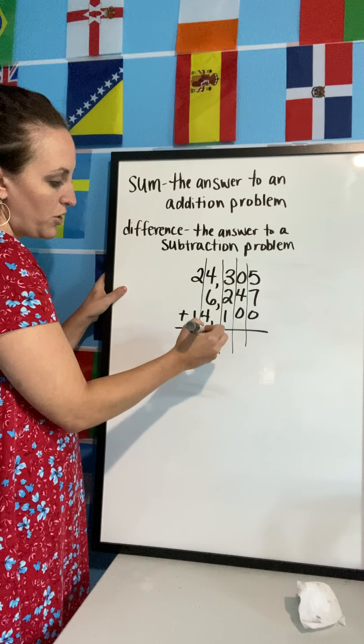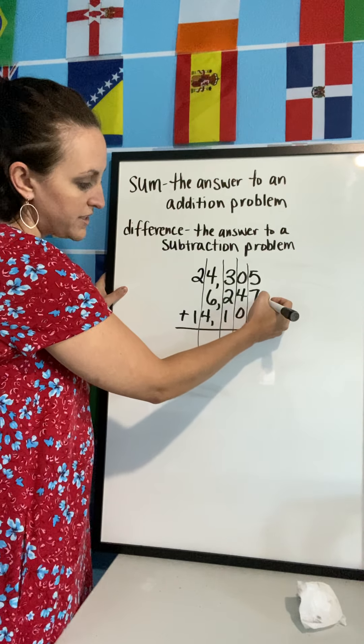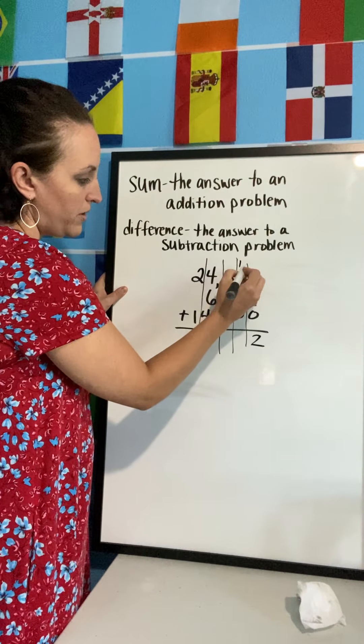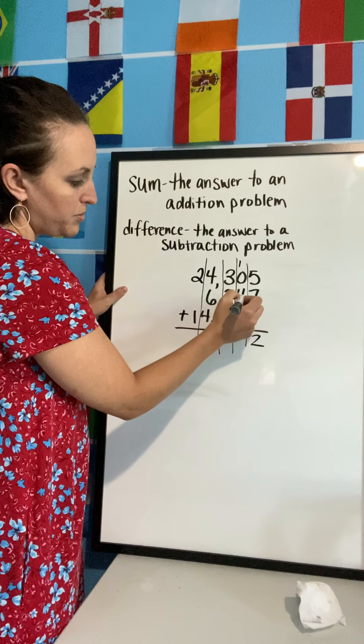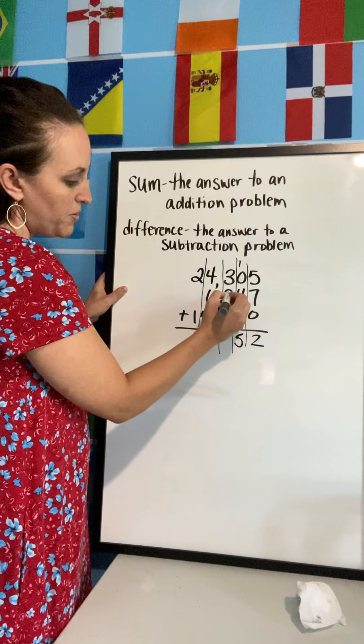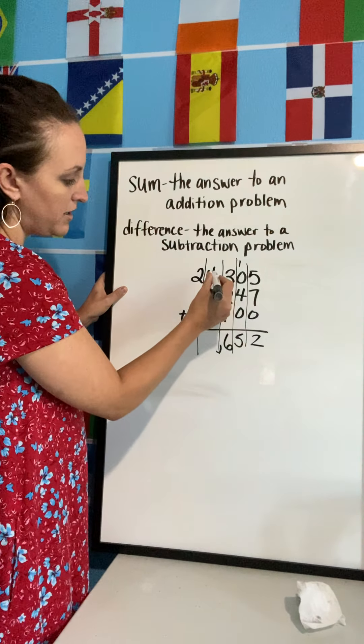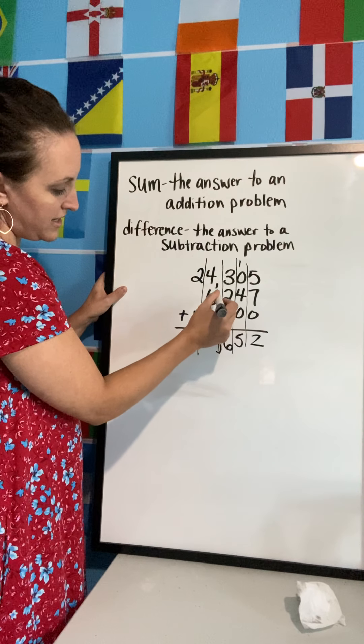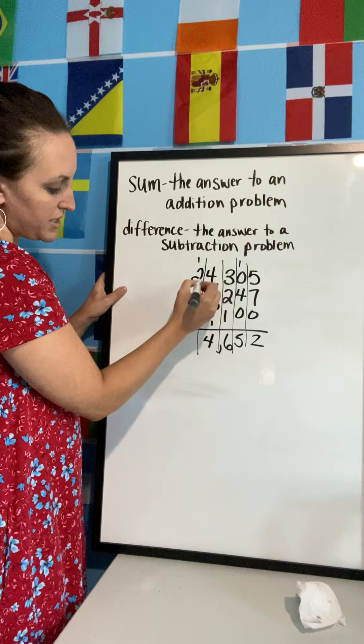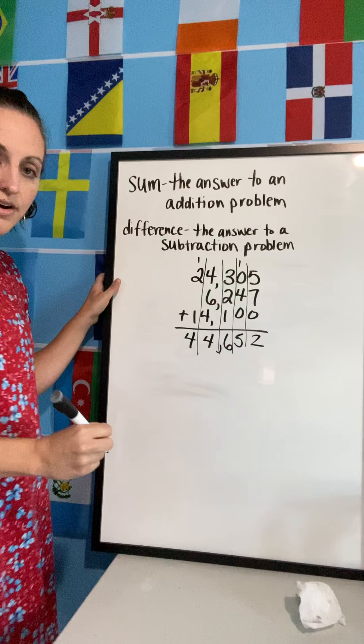And I'm just adding three numbers together instead of two. Well, I know five plus seven is 12, 12 plus zero is still 12, so I write my two, regroup my one. One plus zero is one, plus four more is five, plus zero is still five. Three plus two is five, plus one more is six, and I'm going to put my comma. Four plus six is ten, ten plus four is 14. Write my four, regroup my one. One plus two is three, and three plus one is four.